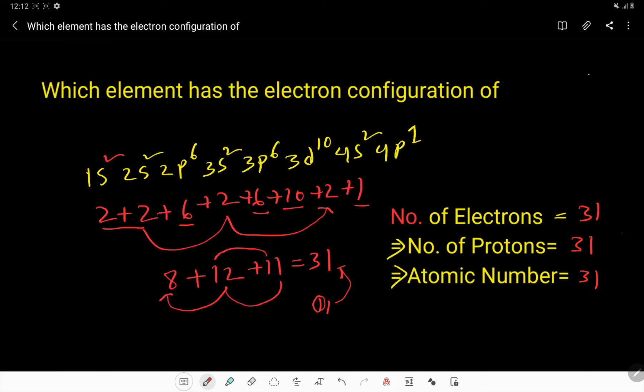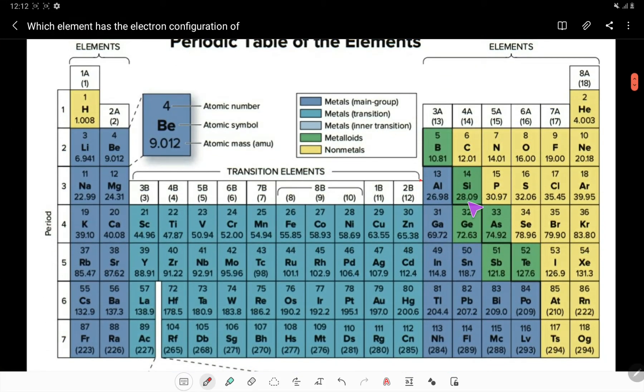So let us open the periodic table now. So 31, look here, 31 is gallium, its atomic number is 31.